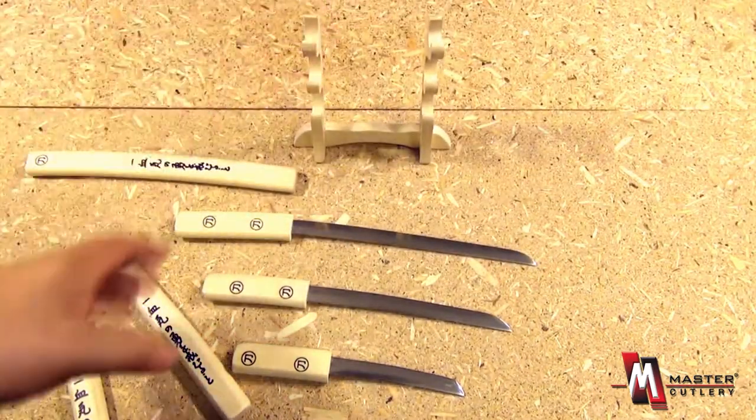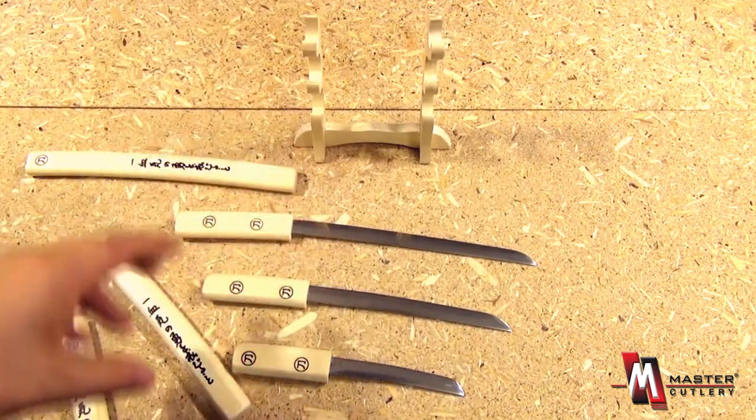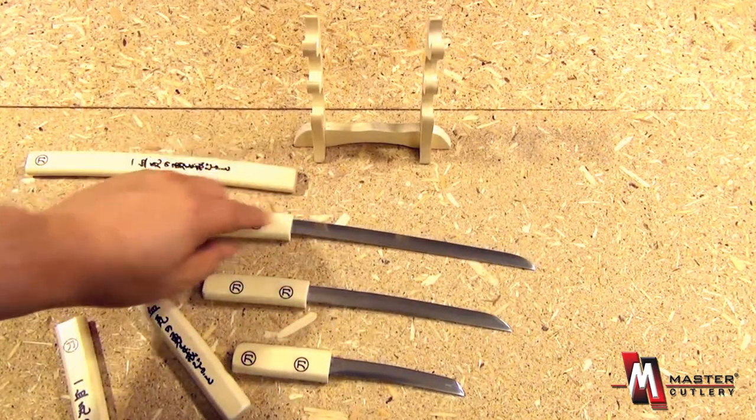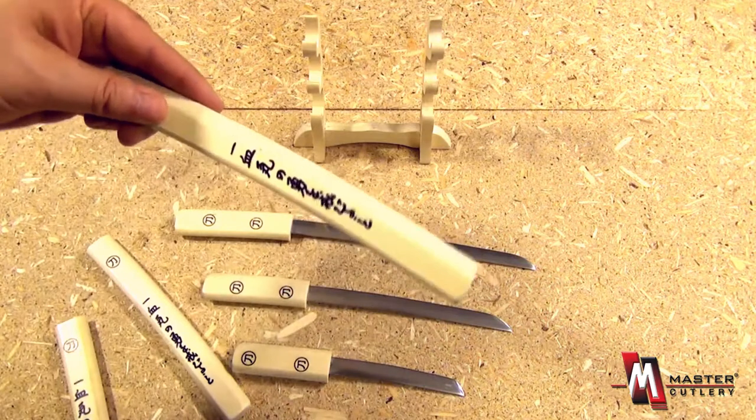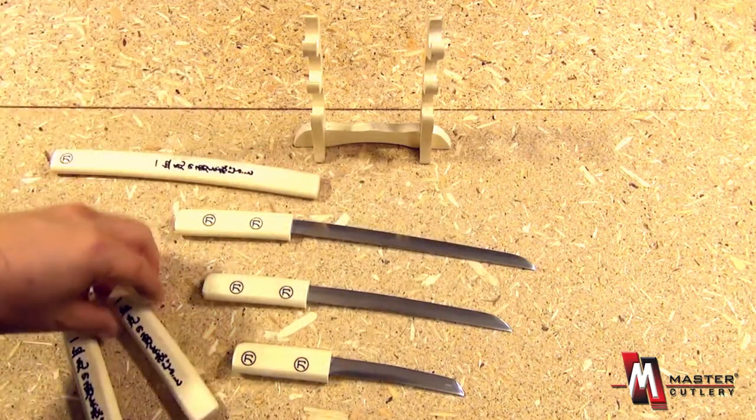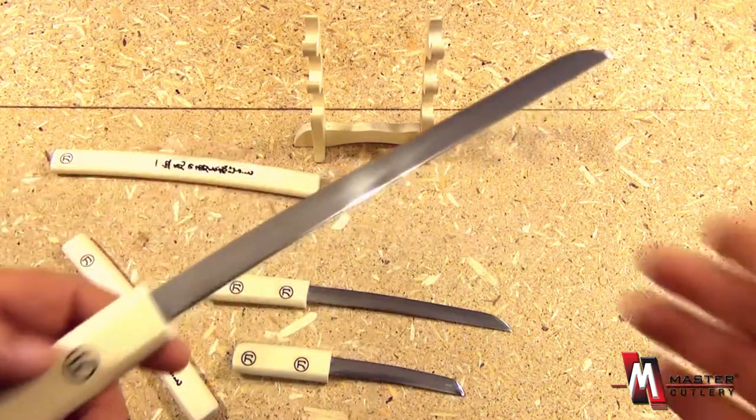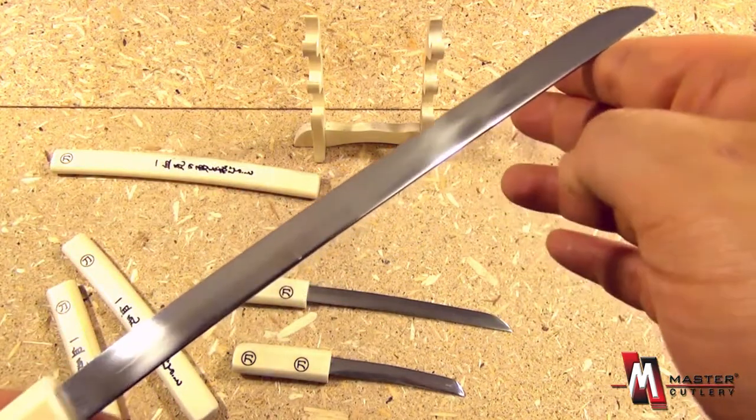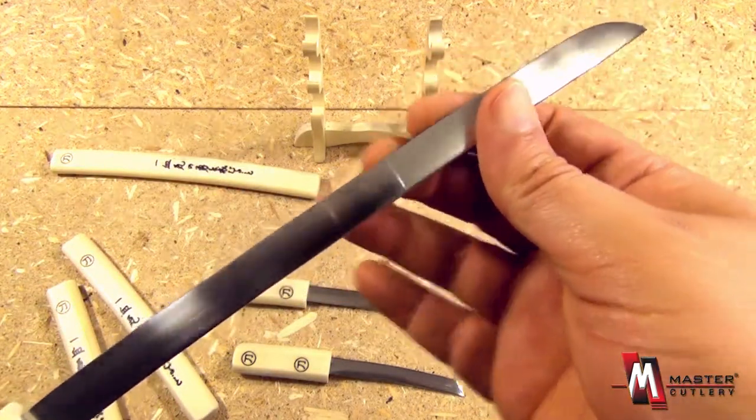You can see the satin finish on these blades. Stainless steel with a wooden handle and characters. This will make an excellent decoration, a gift for executives, businessmen, anyone with a desk and you see the little blades there.